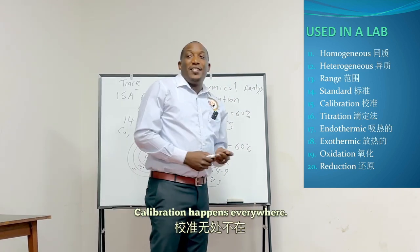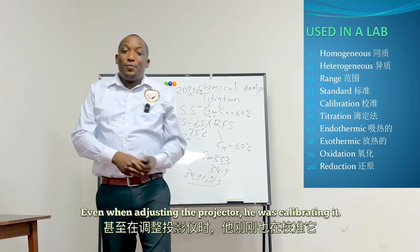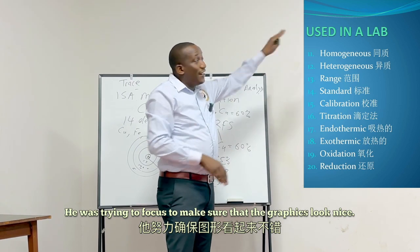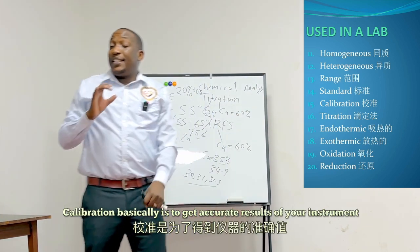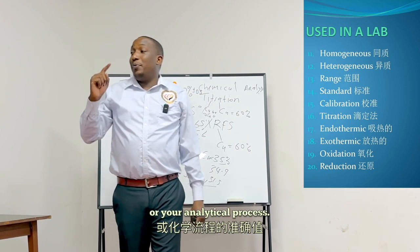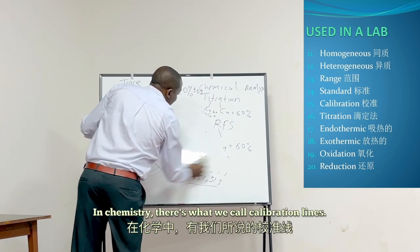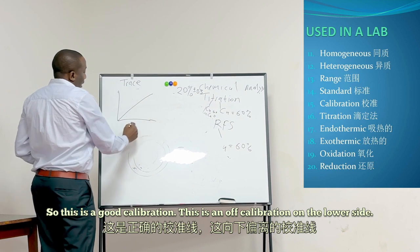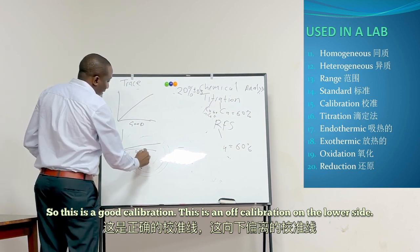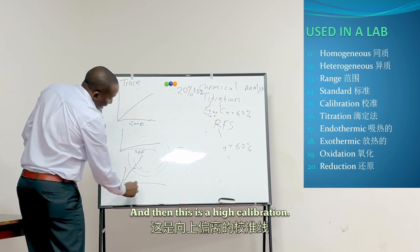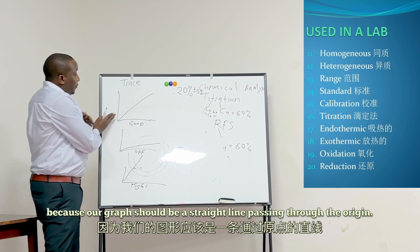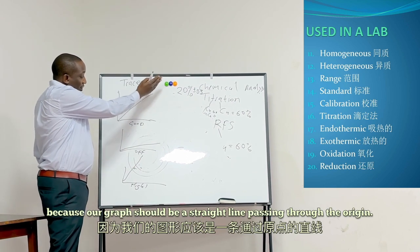Calibration happens everywhere — even adjusting a projector to focus and make the graphics look nice is calibration. In chemistry, calibration is to get accurate results from your instrument or analytical process. We have calibration lines: a good calibration, an off-calibration on the lower side, and a high calibration. We calibrate to bring results to normal — our graph should be a straight line passing through the origin.